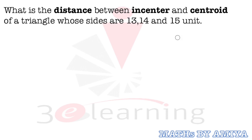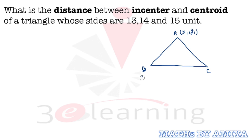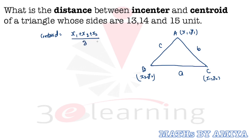For coordinate geometry, if you have coordinates of vertices A(x₁, y₁), B(x₂, y₂), and C(x₃, y₃), where BC = a, CA = b, AB = c, then the centroid coordinates are the averages: ((x₁ + x₂ + x₃)/3, (y₁ + y₂ + y₃)/3). This is quite a well-known formula.